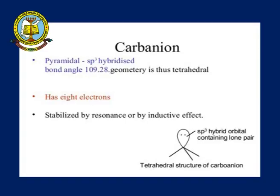The Carbanion is stabilized by the inductive effect. The inductive effect is the polarization of electrons towards the more electronegative atom. Since the Carbanion is carrying a negative charge, it will be stabilized by the inductive effect — if any more electronegative atom is present, then the Carbanion will get stabilized.